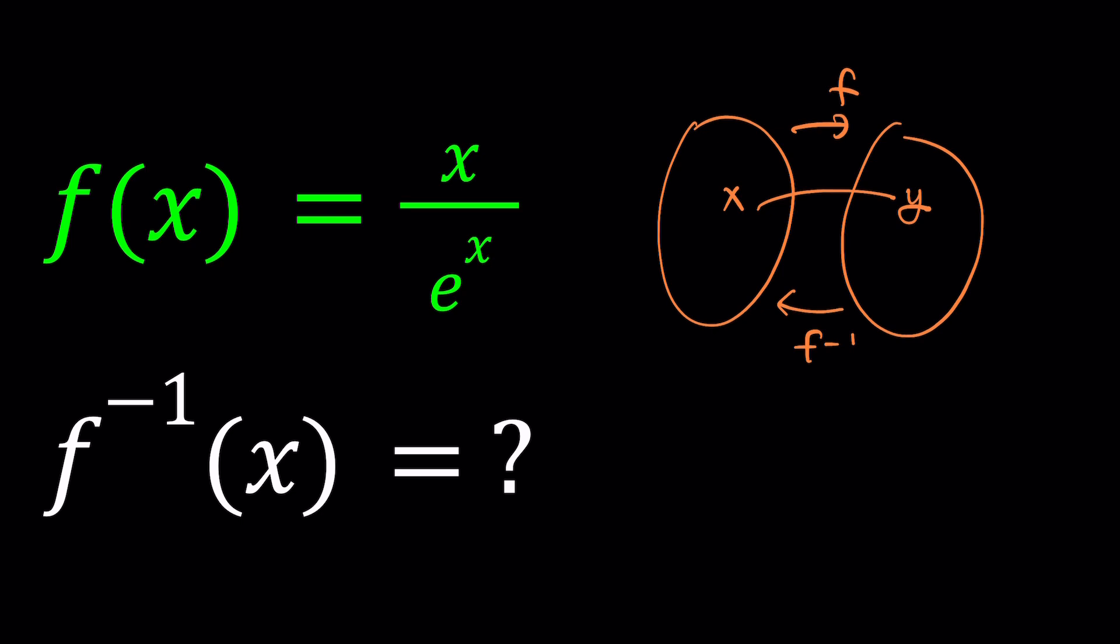Of course not every function is invertible. You have to have a bijection. It has to be one to one and onto, because if you have two inputs that give you the same output, then it can't be invertible because in the inverse case we're going to have an issue.